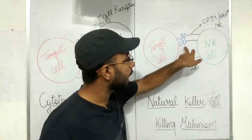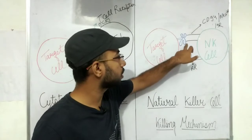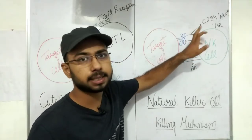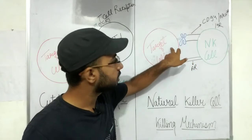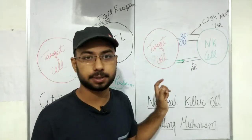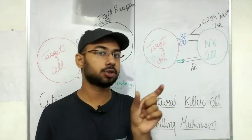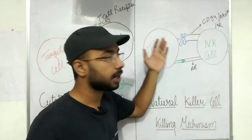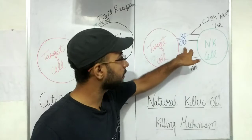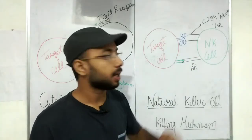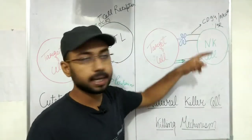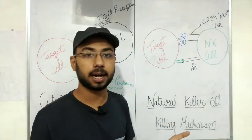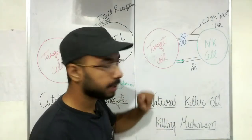The identity card here is the MHC molecule. If MHC is present on the cell surface — and note I am not talking about whether an antigen is presented or not, just the presence of MHC itself — then it signals that the cell is a normal body cell. But if MHC is not present on the cell surface, the NK cell will kill it, as it lacks the identity card.